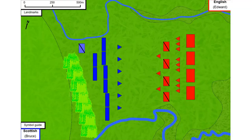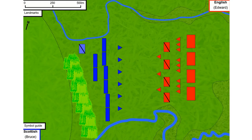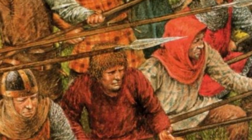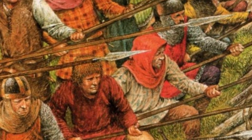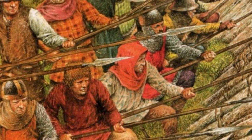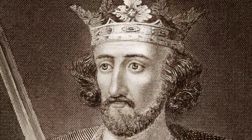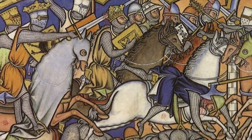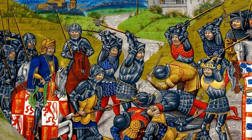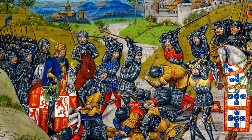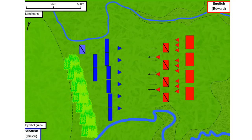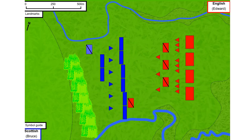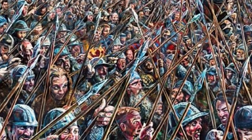Bruce deploys three Schiltrens of pikemen four ranks deep across the entire front, anchored on the right. Bruce plans to advance with this wall of pikemen, screened by archers, and force the English army into the cramped space between the rivers. Bruce keeps his cavalry and a fourth Schiltren of pikemen in reserve. The Scottish deployment for battle surprises Edward. The English knights insist on leading the attack and deploy up front with only a few archers, leaving the English infantry in a mass behind the cavalry, blocked from joining the battle. The battle opens with an exchange of archery. Although the English archers win this exchange, it diverts fire away from the Scottish Schiltrens, which are able to advance unhindered.